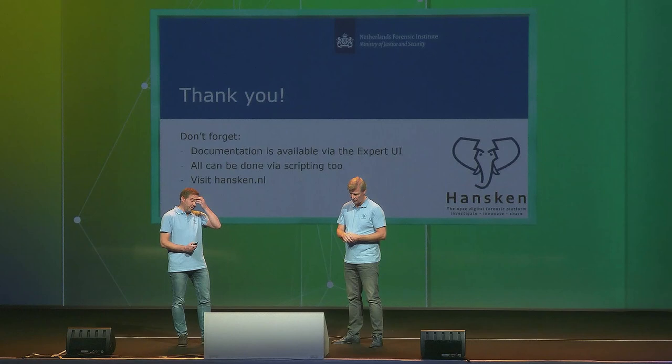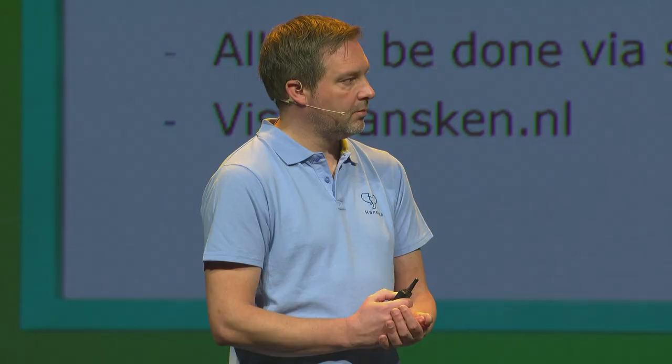That covers what we want to present on the Hansken query language today. Documentation is available via the expert user interface, and everything shown today can also be done via the scripting API in Python. One recent example: a script that downloads photoDNA strings — Microsoft's fuzzy image hashing — from pictures and calculates how similar those images are to each other. Hopefully this will be inside Hansken natively, but already the scripting API enables these kinds of advanced queries.